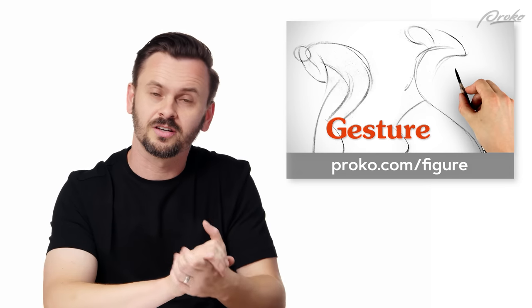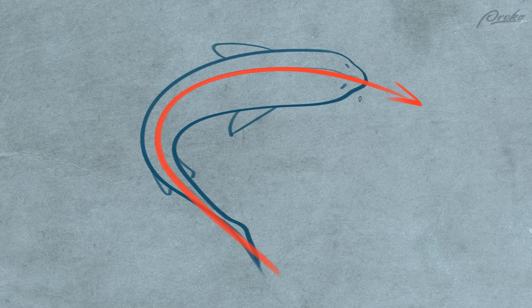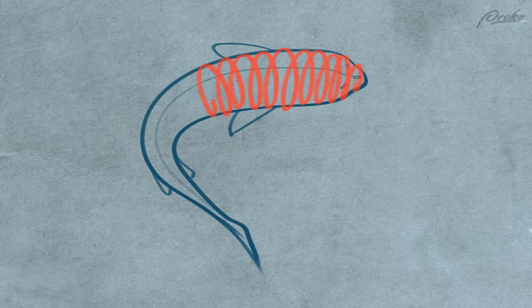I have another lesson on gesture in my figure drawing course. Gesture is the movement, it's the flow, but it's also the pose — the idea of what is happening, what this object is doing. If we take this fish, we could show the gesture with a single line that explains how the fish is moving, in what direction, how much it's curving. But the gesture is not the line itself — the line just represents the gesture. The same gesture can be represented with two lines, or a big spirally line that goes around the form but still shows the big curvature.